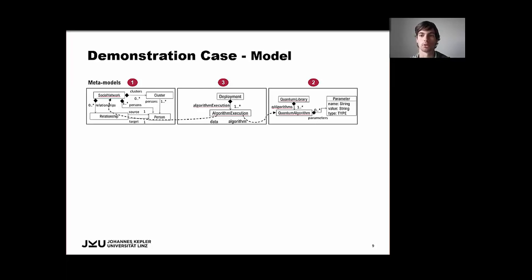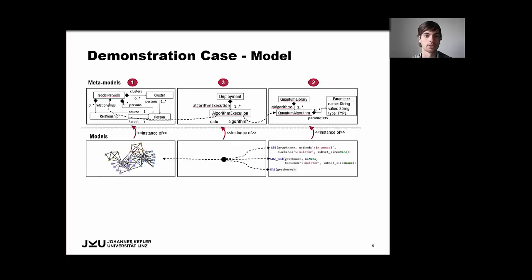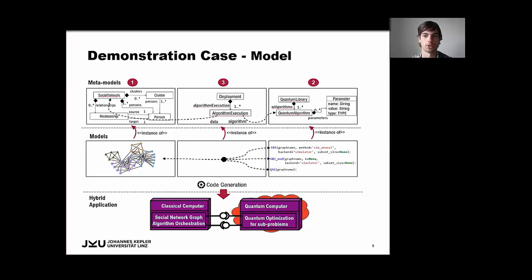And as it links two metamodels, it is considered a weaving model. And by using this representation, we can now deploy the algorithms with different quantum computing technologies and offer different deployment solutions. So in this sense, first weaving models as the instances of the metamodels are created. And then the code is generated to actually create the hybrid applications and execute the algorithms for the particular problem.